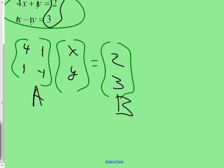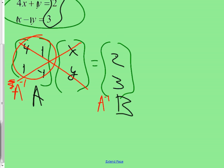The process always ends the same way: multiply both sides on the left by the inverse of A. A⁻¹ times A cancels on the left, leaving [x, y] equal to A⁻¹ times B. Using the calculator, the answer is x = 1 and y = −2. Raise your hand if you had that. If you had trouble entering it, come see me during work time.